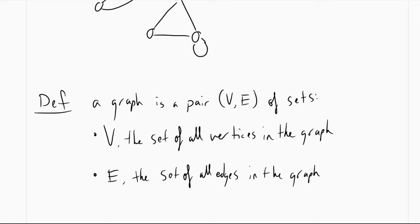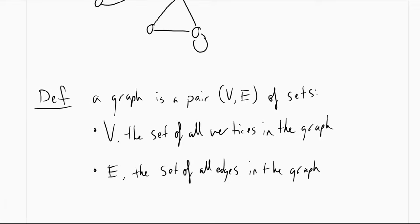So a graph is a pair of two sets: V, which is a set of all vertices in the graph, and E, which is a set of all edges in the graph. So really what we're saying is that a graph is defined by the vertices that it has and the edges that connect the two vertices.